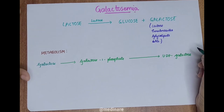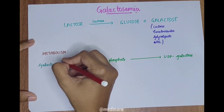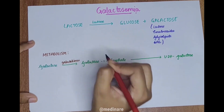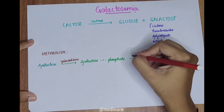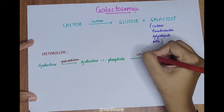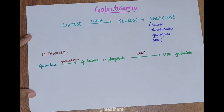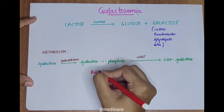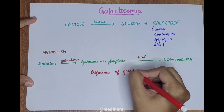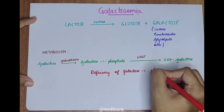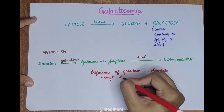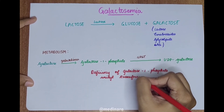This UDP-galactose is converted into UDP-glucose and used as fuel by our body. The deficiency of the enzyme galactose-1-phosphate uridyl transferase causes galactosemia.